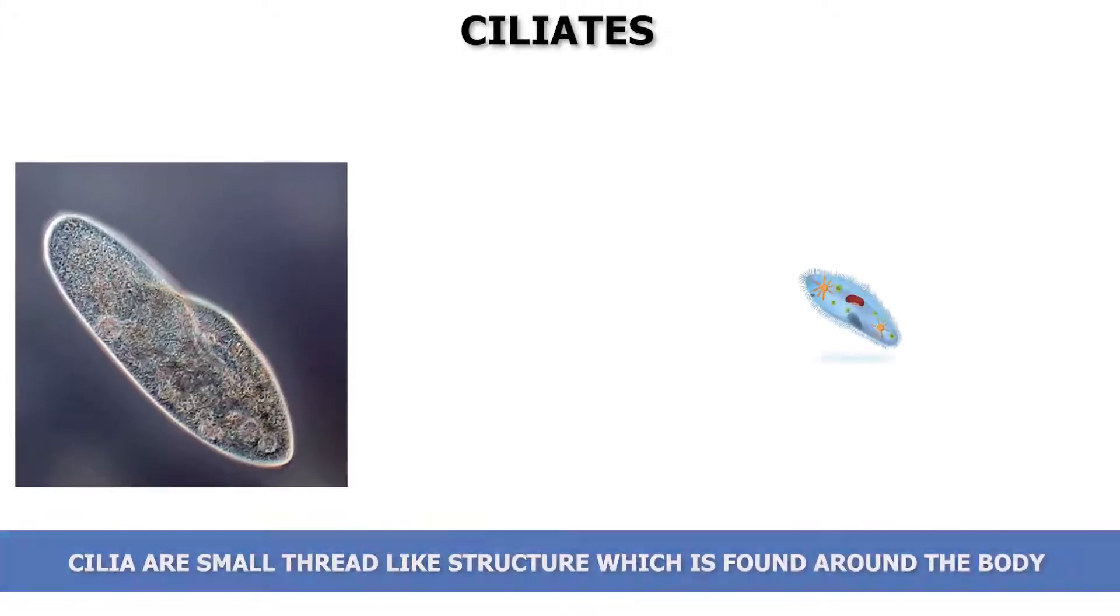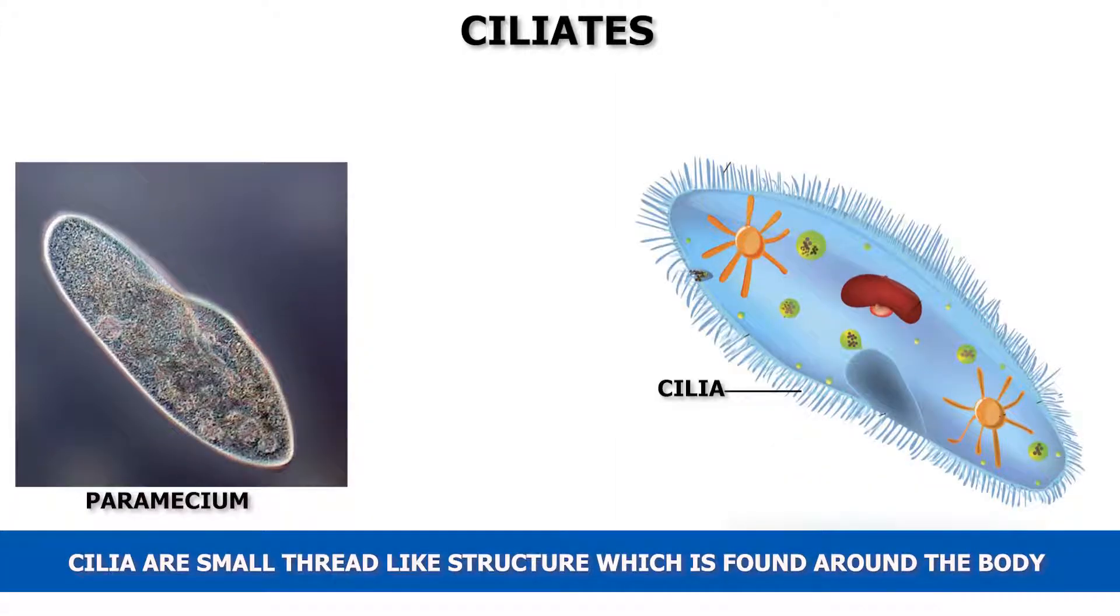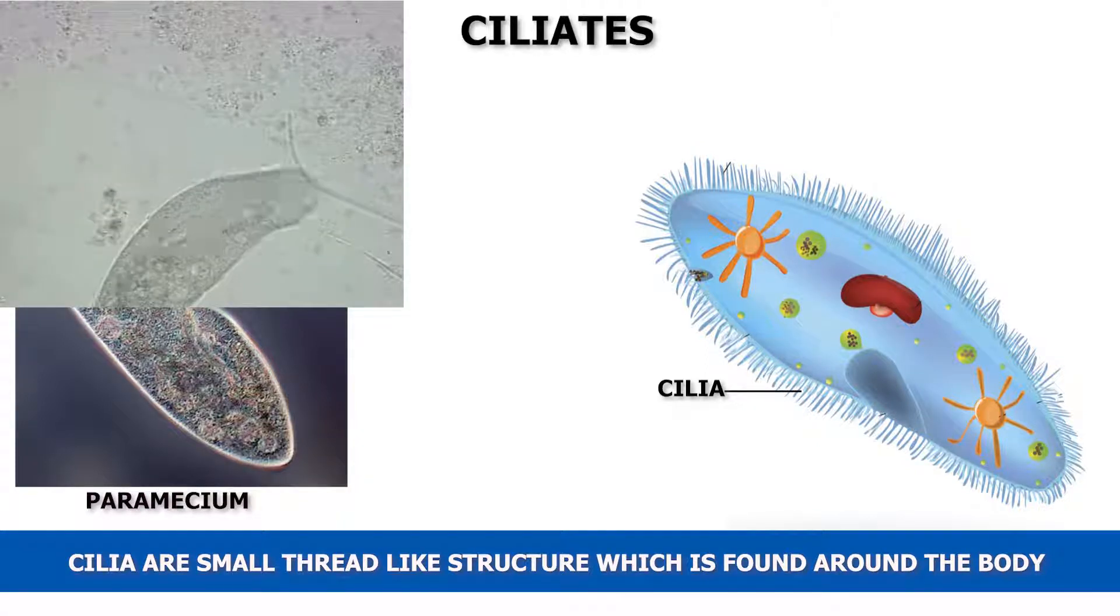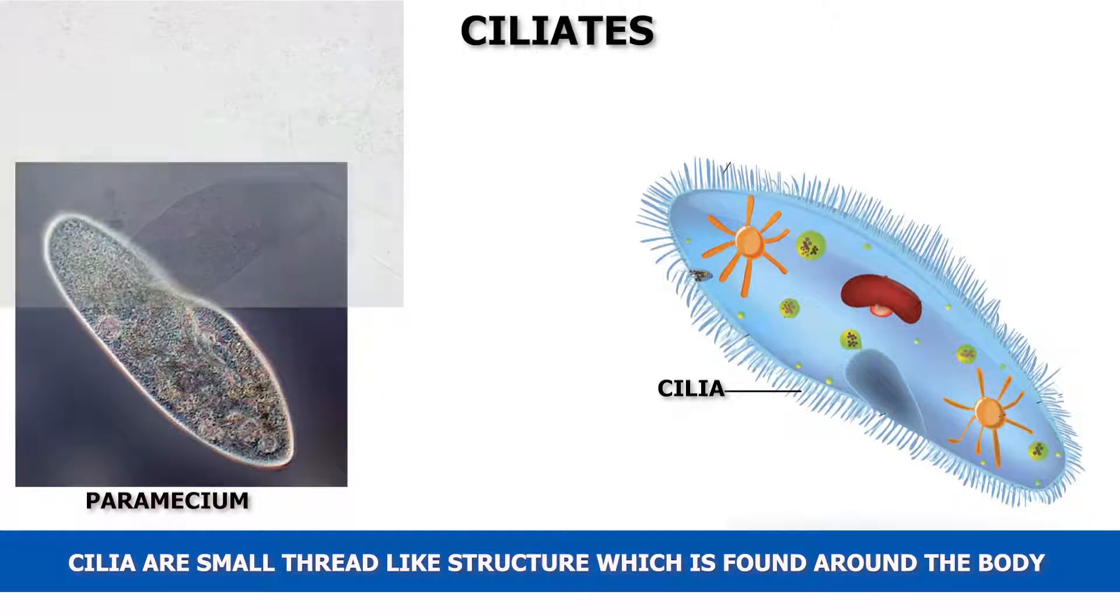Cilia are small thread-like structures which are found around the body. Some protozoans move with the help of these structures. They are called ciliates. Paramecium is a ciliate.